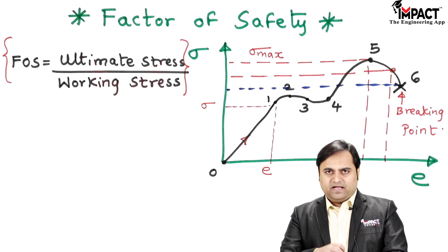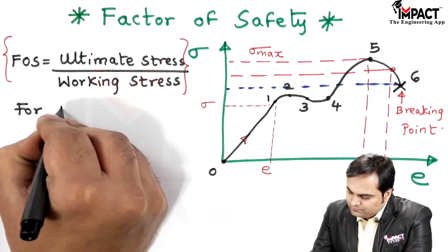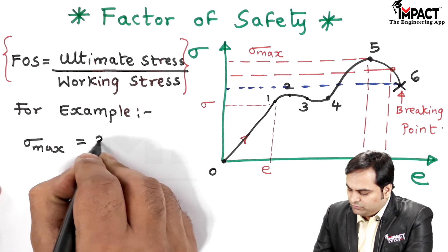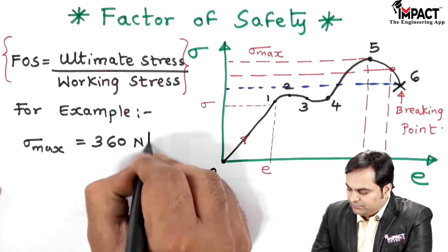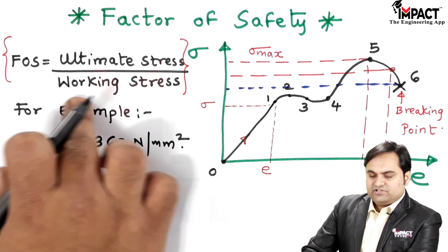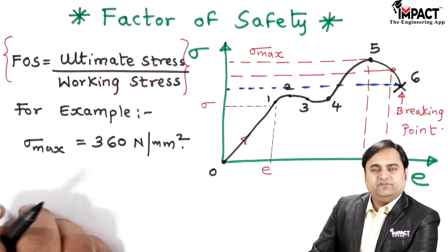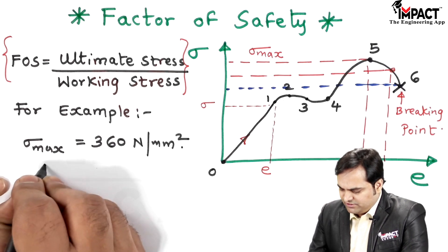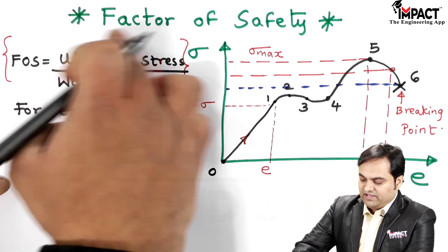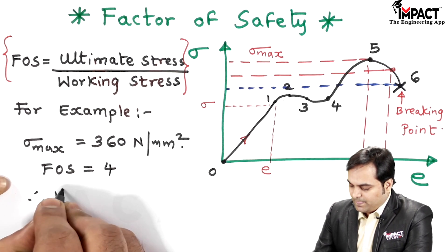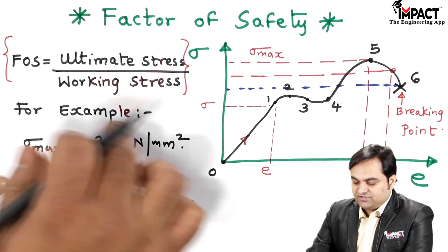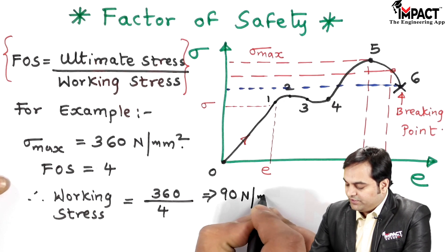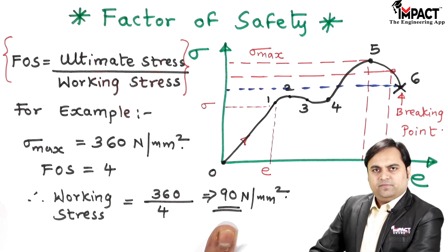To explain this with an example: if the ultimate stress is equal to 360 Newton per mm², then the working stress should be much less than this value. Assuming a factor of safety of 4, the working stress equals ultimate stress divided by factor of safety — that is, 360 divided by 4 — which comes out to be 90 Newton per mm².